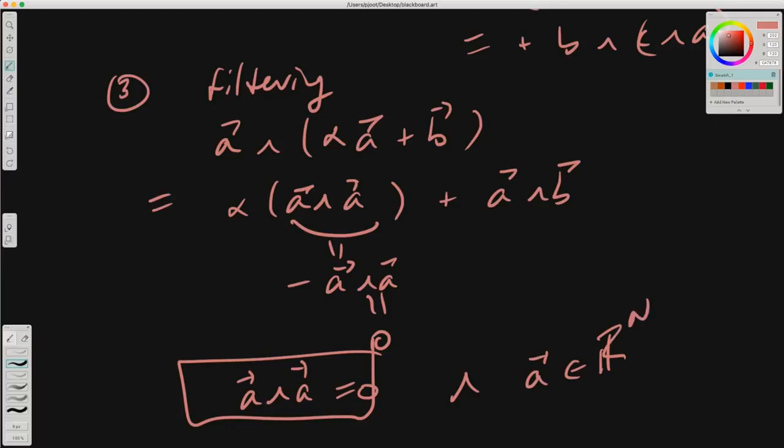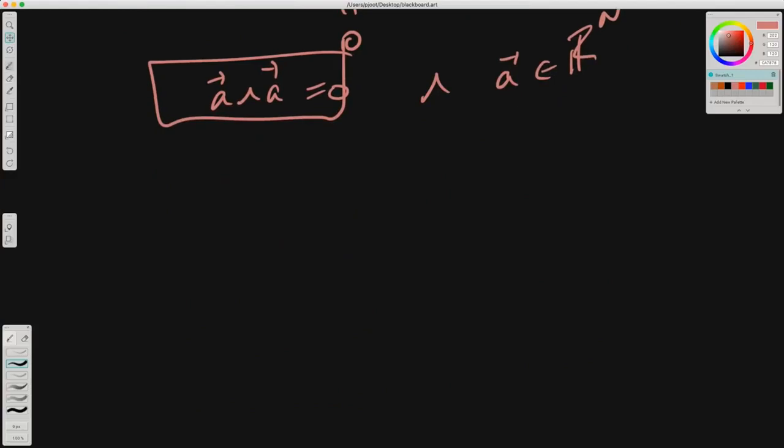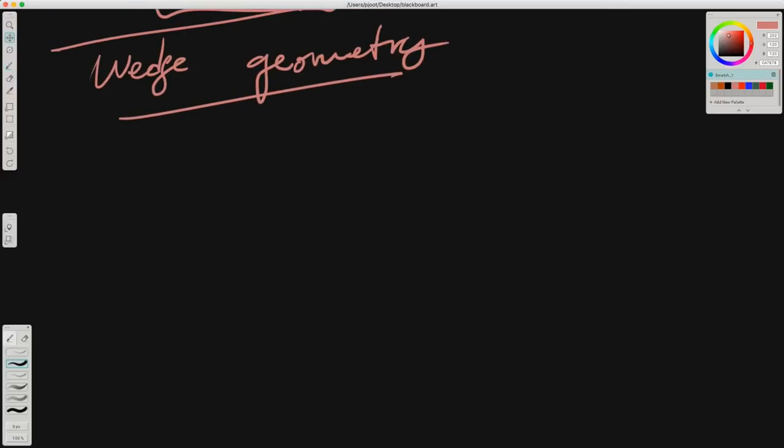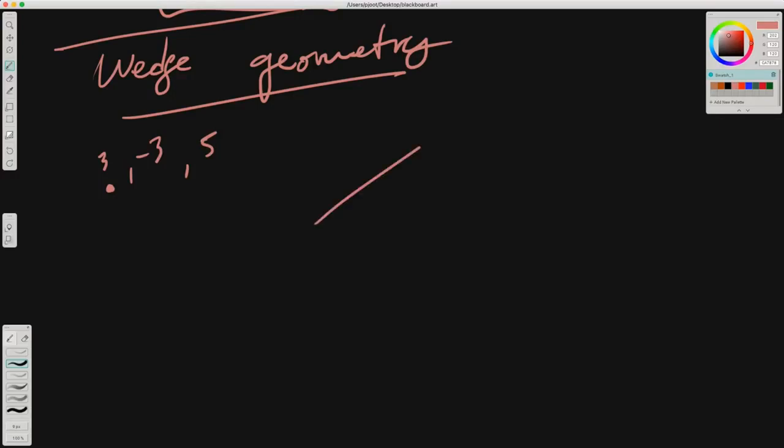So what is this wedge product? Geometrically, the wedge product can be interpreted as the extension of a vector to a higher dimension. A point is like a zero-dimensional space with a magnitude, say 3 or minus 3. The difference between 3 and minus 3 can be thought of as an orientation.